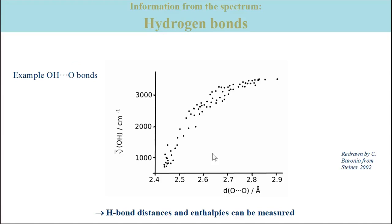The frequency changes due to hydrogen bonding depend on the hydrogen bond distance and on its strength, and empirical correlations with both quantities have been established. An example is shown here for OH groups hydrogen bonded to oxygen atoms. The plot shows that the OH stretching frequency depends on the distance between the two oxygen atoms of the hydrogen bonded molecules. The shorter the distance, the lower the frequency.